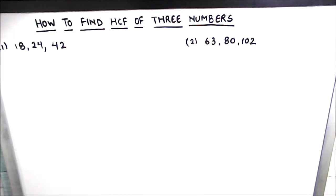Hello everyone. In this video we are going to learn how to find the HCF of three numbers. We will be solving two examples. For finding the HCF we will be using the prime factorization method or the factor method. The first is the ladder method or prime factorization method, and the second is the factor method, where we find the factors of each number separately.